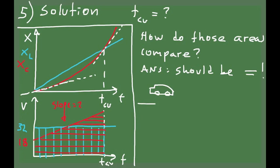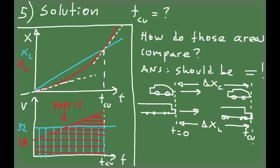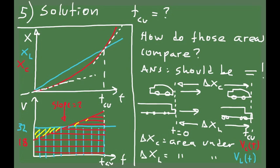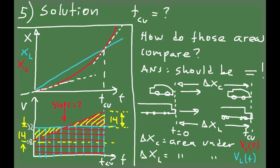The areas should be equal because the car and the locomotive share a common position at t equals zero and again at the catch-up time. That means they have each traveled the same distance — delta x_c equals delta x_l — and since position is the area under the velocity versus time plot, the red area equals the blue area. This means the yellow triangles I'm marking have equal areas. Since the angle at the vertices of those triangles is the same, their heights must also be equal. The height of the left triangle is 32 minus 18 meters per second, which equals 14 meters per second. So the height of the right triangle is also 14 meters per second.